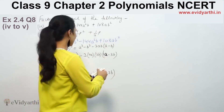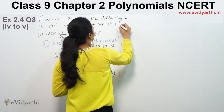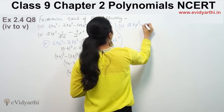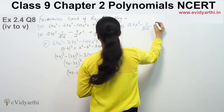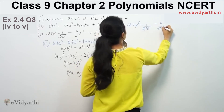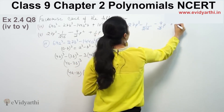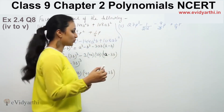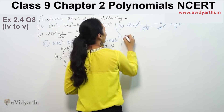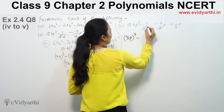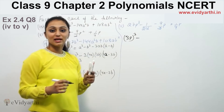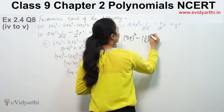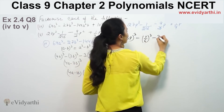Same approach applies to part 9. We are given 27b³ - 1/6b² + 1/4b... So 27b³ is (3b)³. We write 1/6 as the corresponding term, and 1/6 cubed gives us the second cube. The formula is the same: (a - b)³, with a = 3b and b = 1/6.